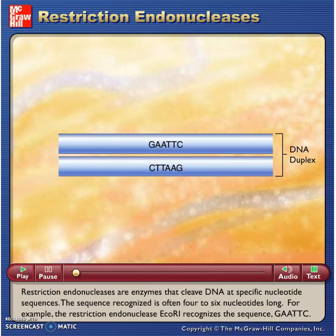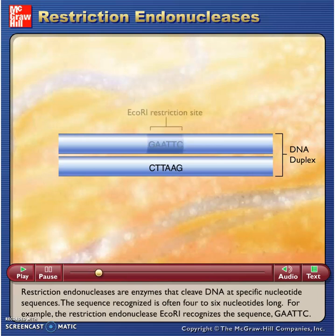Restriction endonucleases are enzymes that cleave DNA at specific nucleotide sequences. The sequence recognized is often 4 to 6 nucleotides long. For example, the restriction endonuclease EcoRI recognizes the sequence G-A-A-T-T-C.